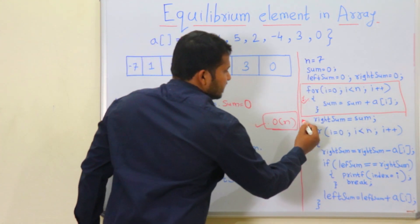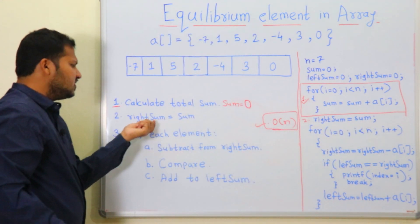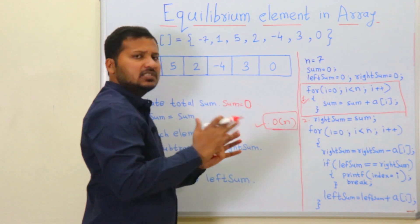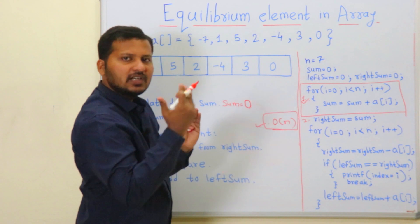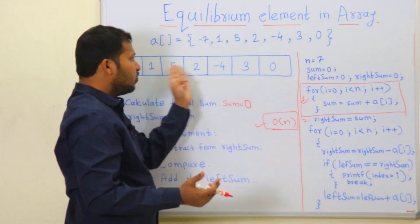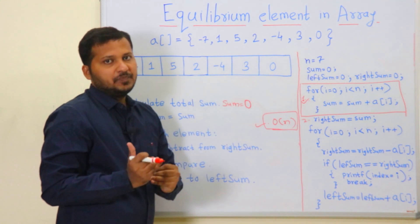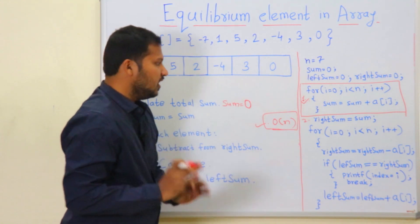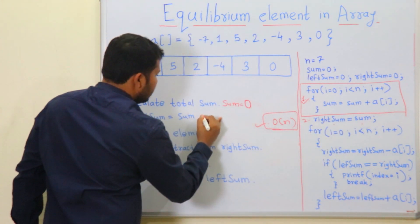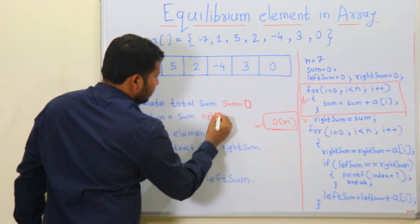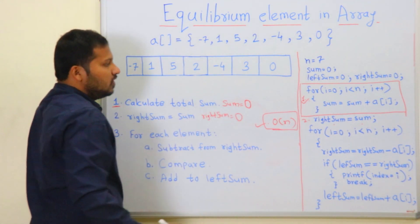The second step is to set right_sum equal to total sum. Right_sum is a variable representing the sum of elements on the right side. We don't know which element is the equilibrium element yet, so right_sum = sum = 0 here. Left_sum is also initialized to 0.